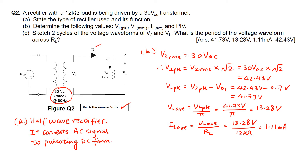For PIV, in a half-wave rectifier system, the PIV formula equals V2 peak. V2 peak, which we calculated earlier, is 42.43V.